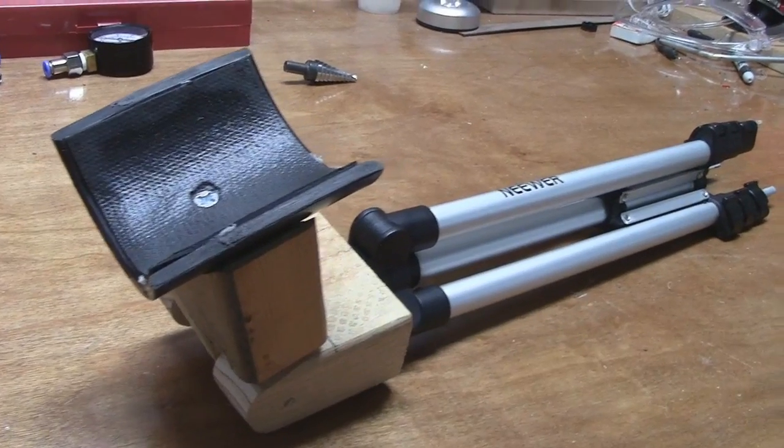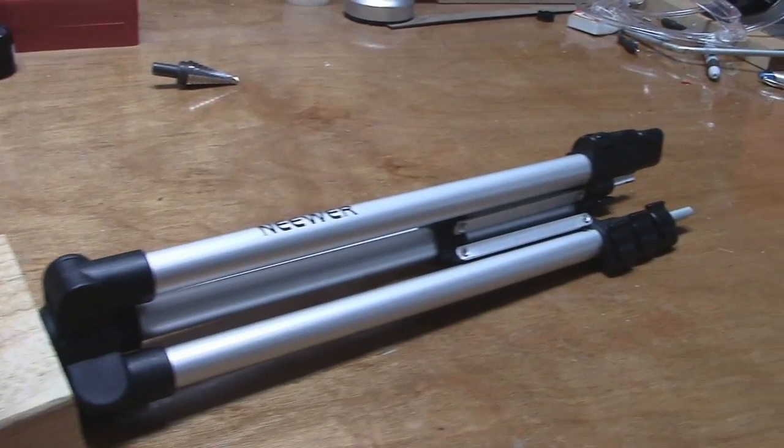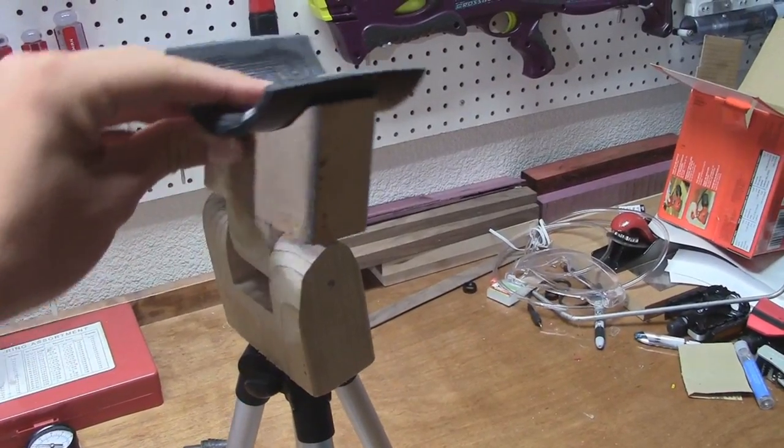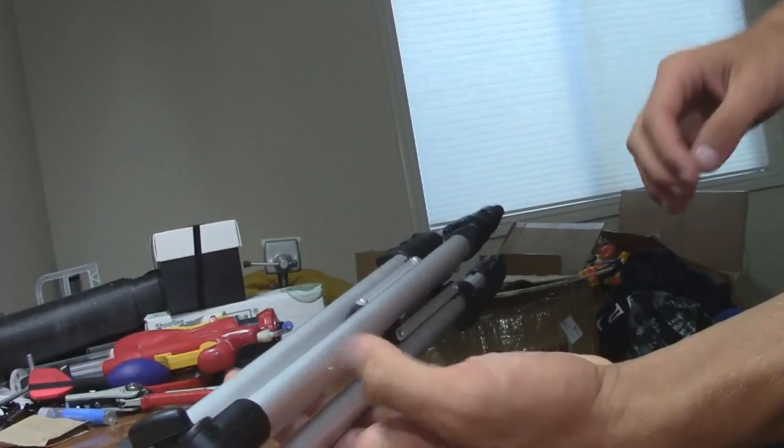The bipod is made from an old camera tripod we had laying around. The head is padded and pivots and the legs are collapsible.